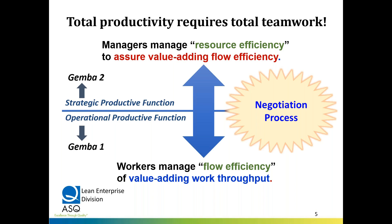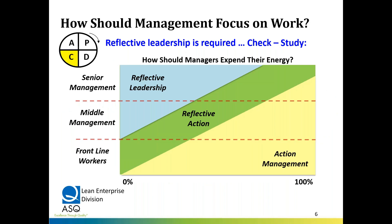Managers are trying to assure value-adding flow efficiency of the business. At the worker level in Gemba One, they're managing flow efficiency — that's the flow of either information or materials — and they're working on providing value-adding work throughput in terms of the deliverables, which may be a service or a product. There's a negotiation process happening between the two about how we get overall efficiency for the organization: do we have the resources we need, and does the work actually flow the way we need compared to customer demand? We also talked about standardized do-check-act and plan-do-check-act, which are basically Gemba One and Gemba Two processes. Deming talked about plan-do-study-act, and that's a Gemba Three process.